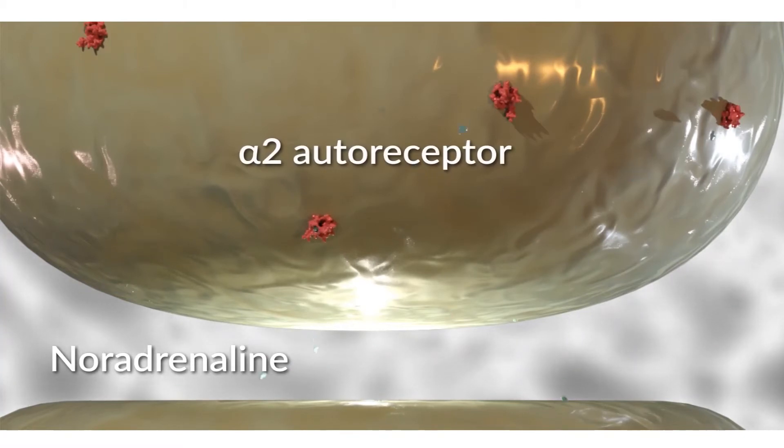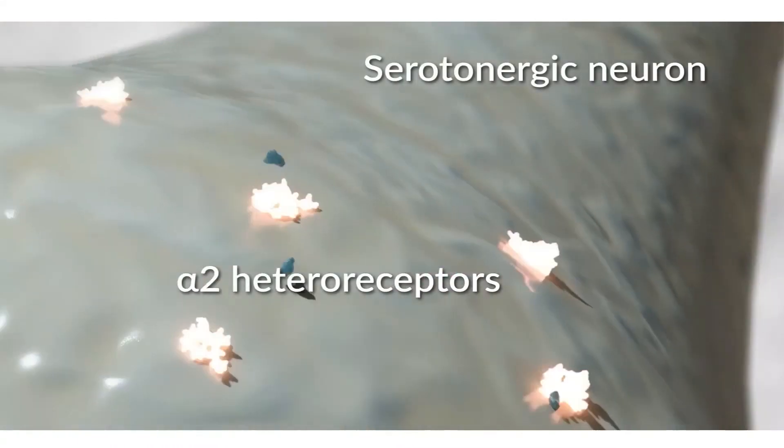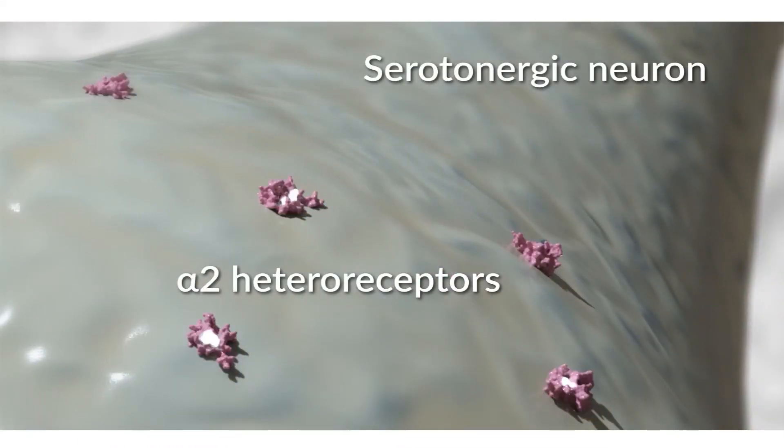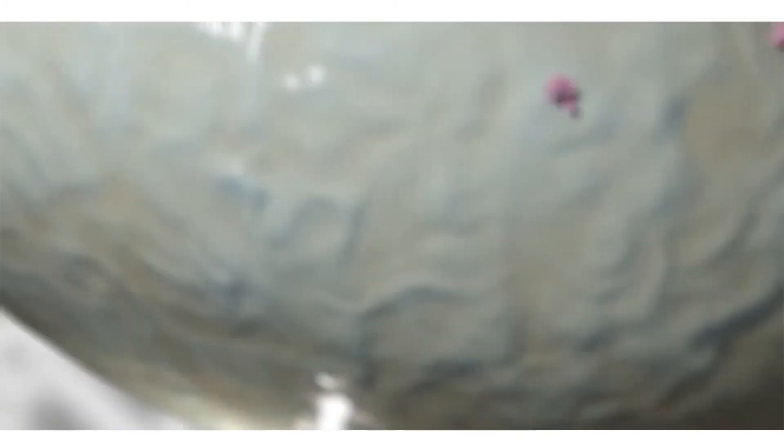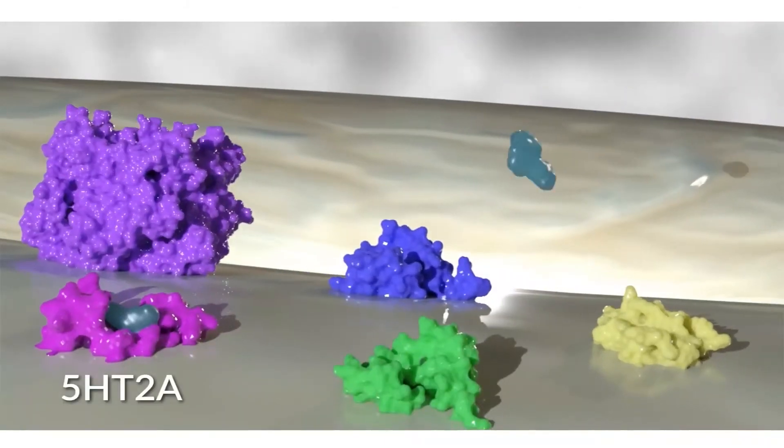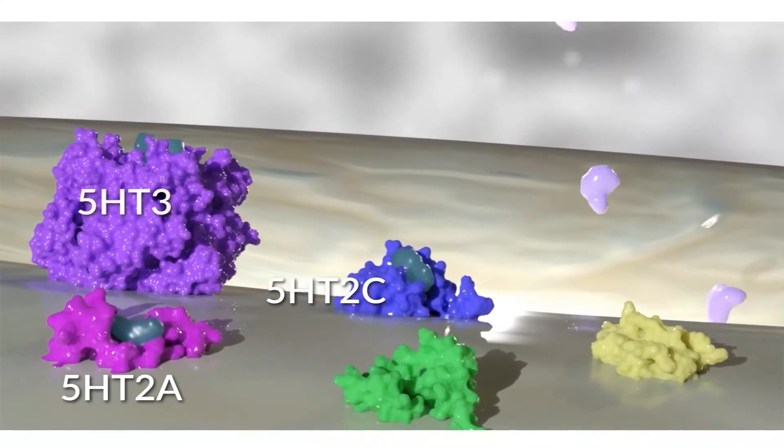Within the neuronal synaptic cleft, noradrenaline is increased, mediated by alpha-2 autoreceptors, resulting in blocking of the inhibitory signal. Similarly, serotonin is increased, mediated by antagonism of alpha-2 heteroreceptors.